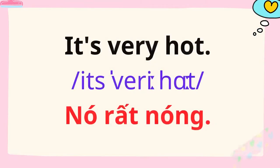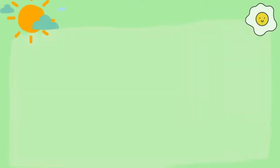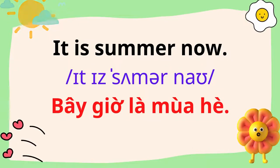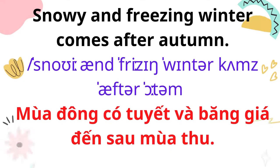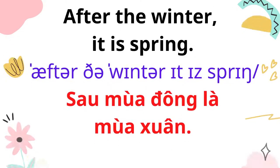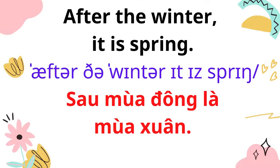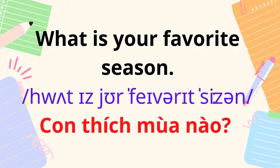It's very hot. It is summer now. Autumn comes after summer. Snowy and freezing winter comes after autumn. After the winter, it is spring. Then comes summer. What is your favorite season?